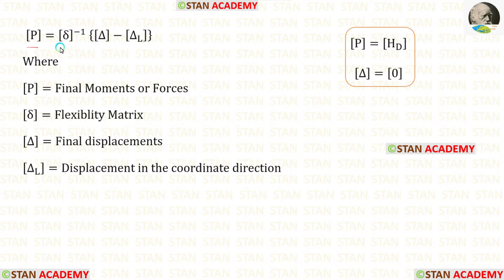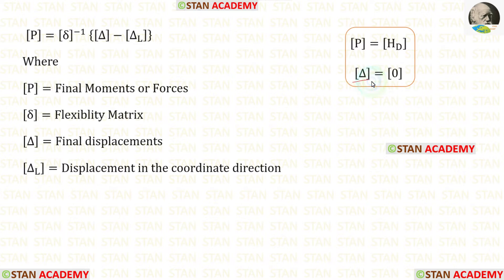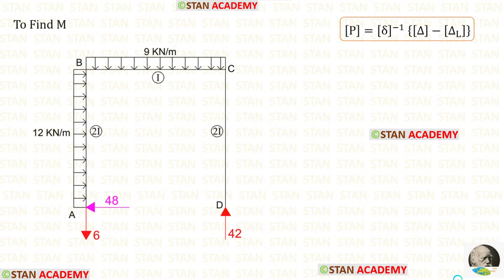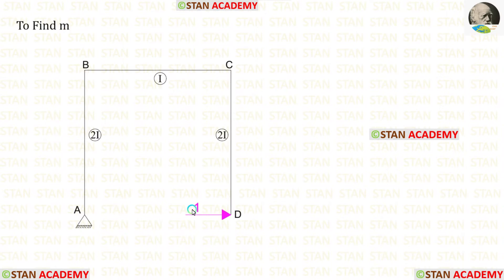Let us see the formula to find HD. The P matrix equals the delta matrix inverse multiplied by (delta matrix minus delta L matrix). Inside the P matrix we will have HD. At point D there is no displacement, so inside the delta matrix we will have 0. To find the delta matrix and delta L matrix we are going to use the unit load method. In the unit load method, first we find the moment M using the loads in the frame, then remove all loads, apply a unit load at the coordinate, and find the moment m.